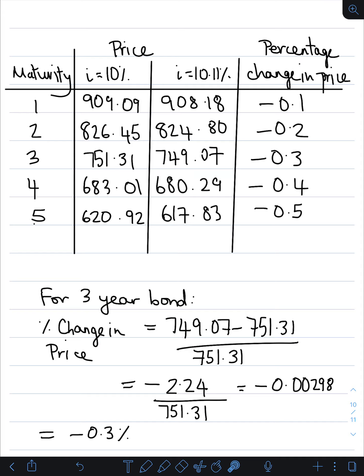That's the inverse relationship — interest rates go up, bond prices go down. Using the three-year row as an example: the percentage change in price is 749.07 minus 751.31, divided by 751.31, which is minus 2.24 divided by 751.31, equaling minus 0.00298, or minus 0.3%. This confirms that whether we use direct prices or the theoretical formula, the unanticipated change in price equals negative duration times the proportional change in the interest rate.